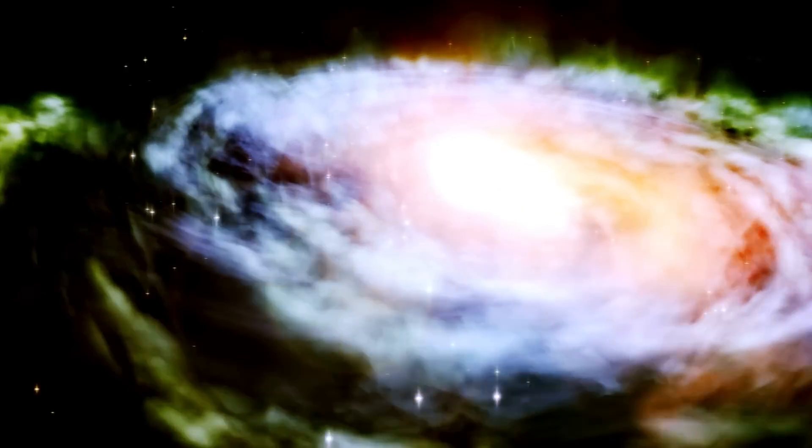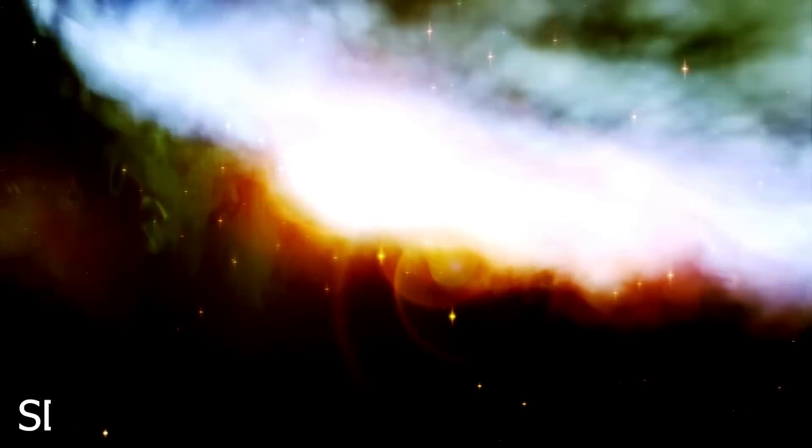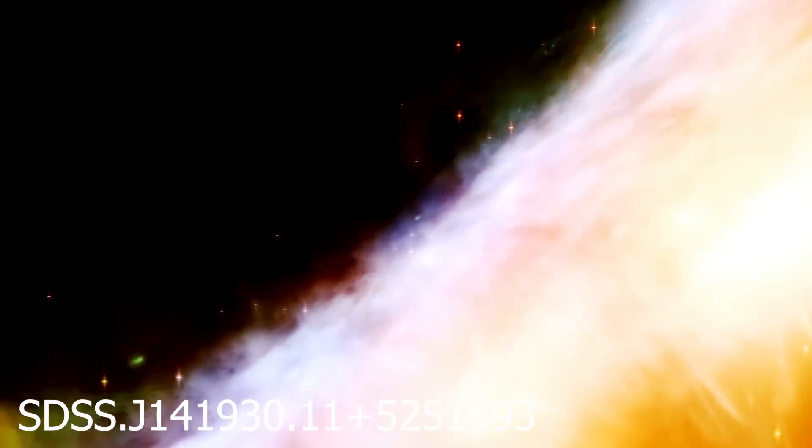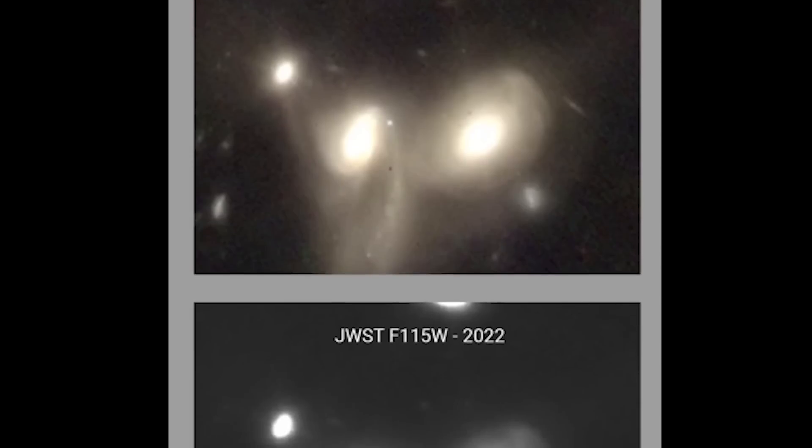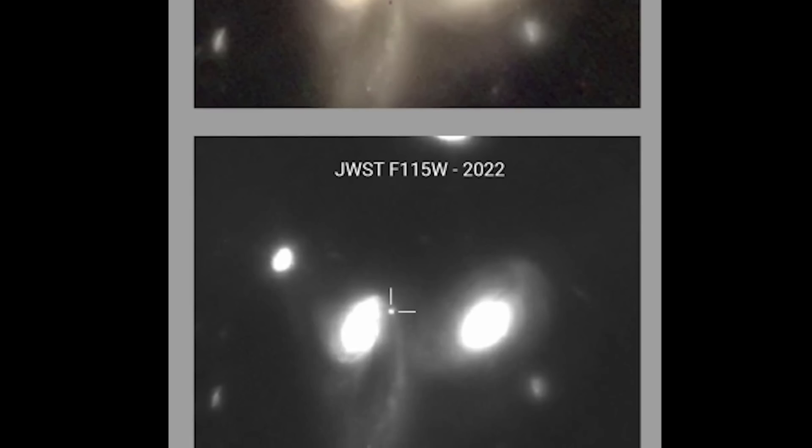One such bright flare was discovered by Webb in the galaxy SDSS.J141930.11 plus 5251593. The telescope took two images of the galaxy five days apart, and the flash was less bright in the second, indicating that it's fading with time.